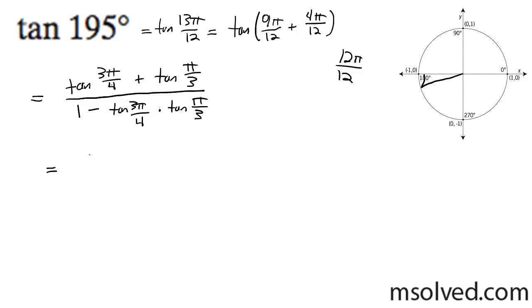Come down here. Tangent of 3 pi over 4 becomes negative 1 plus the tangent of pi over 3 is root 3. Then down here on the denominator, 1 minus negative 1 times the tangent of pi over 3, which is simply root 3.